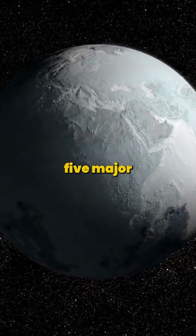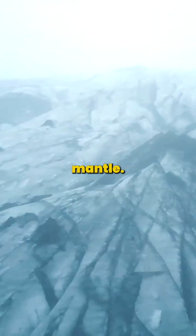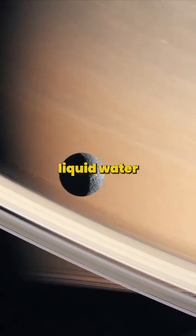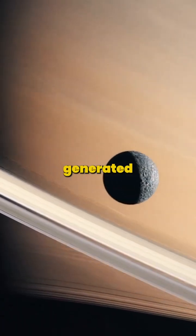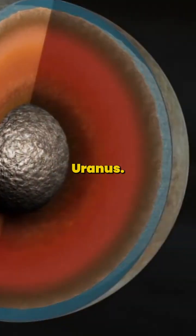Miranda, the smallest of Uranus' five major moons, is thought to have a rocky core surrounded by an icy mantle. Scientists believe that beneath the surface lies a layer of liquid water, kept in a liquid state by the heat generated from tidal forces within the moon caused by its elliptical orbit around Uranus.